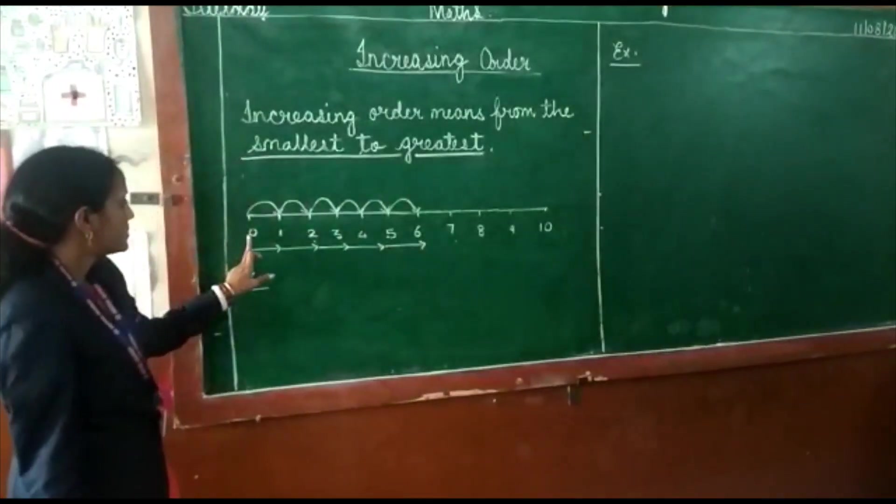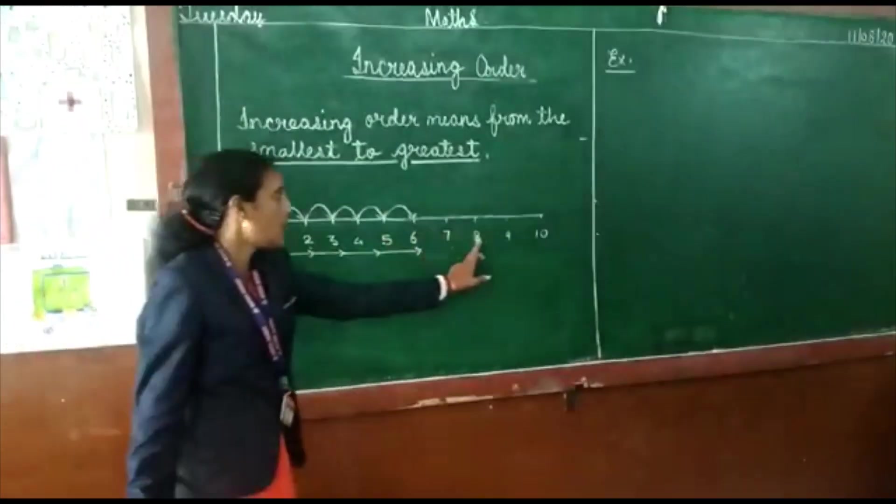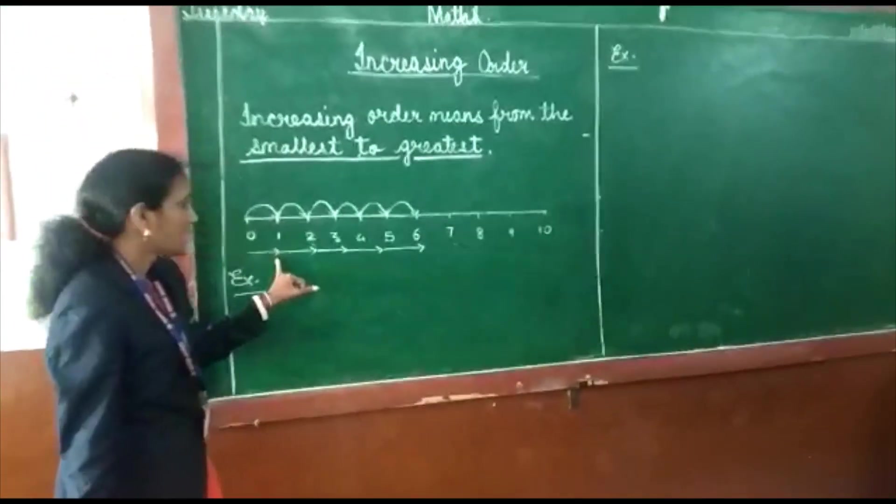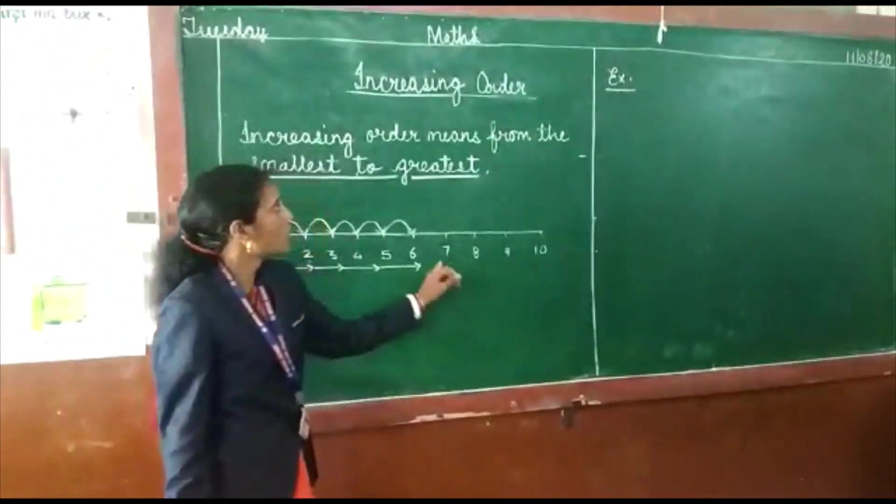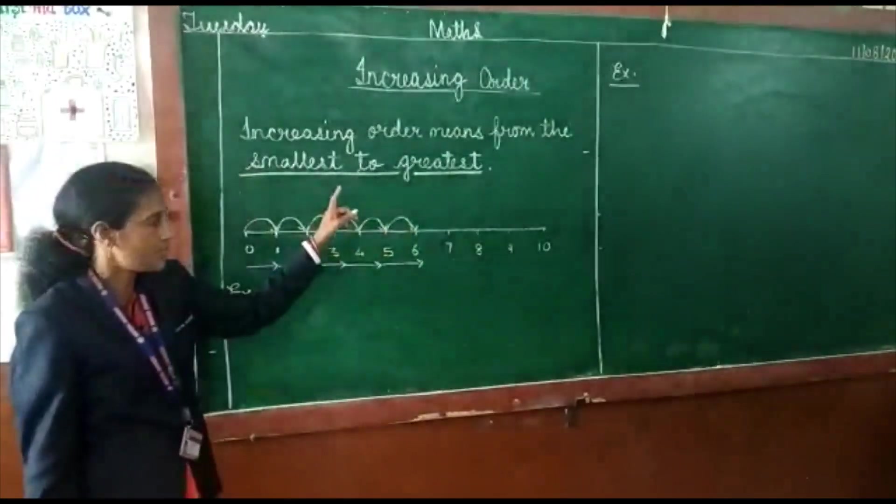Number line pe hum 0 se 10 ki taraf aage badh rahe hai. Jo chota number hai, chote number se hum bade number ki taraf ja rahe hai. Is order ko hum increasing order ke naam se jaante hai.